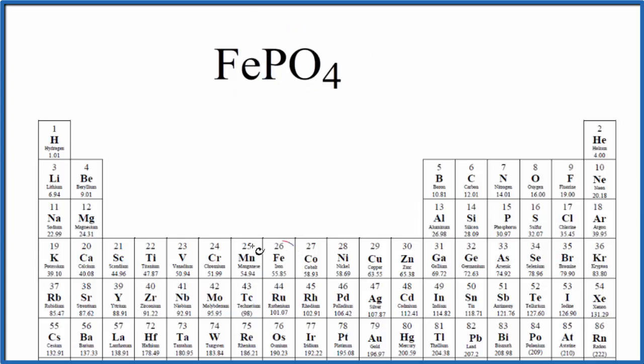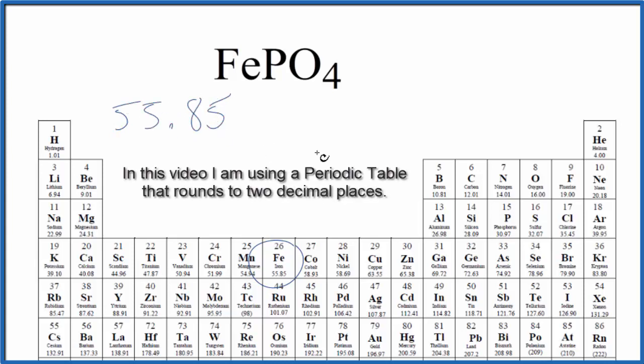On the periodic table, we find iron, which is 55.85 grams per mole. I won't write grams per mole right now. Let's do that at the end.